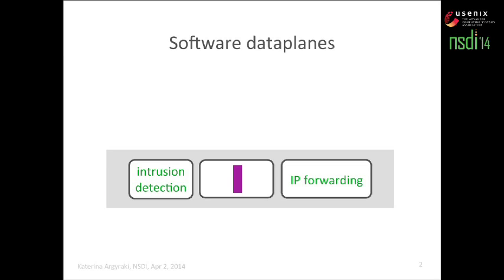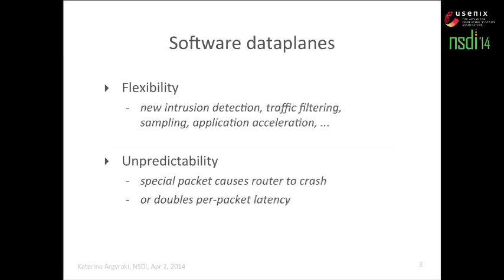So what if this new piece of application acceleration code has a bug? Upon receiving a special type of packet, it does something weird to it — it corrupts it, or executes an infinite loop. Software data planes bring along the promise of flexibility in that we can frequently reprogram their packet processing functionality, but at the same time they bring along the danger of unpredictability, since frequent reprogramming will unavoidably introduce performance and behavior bugs.